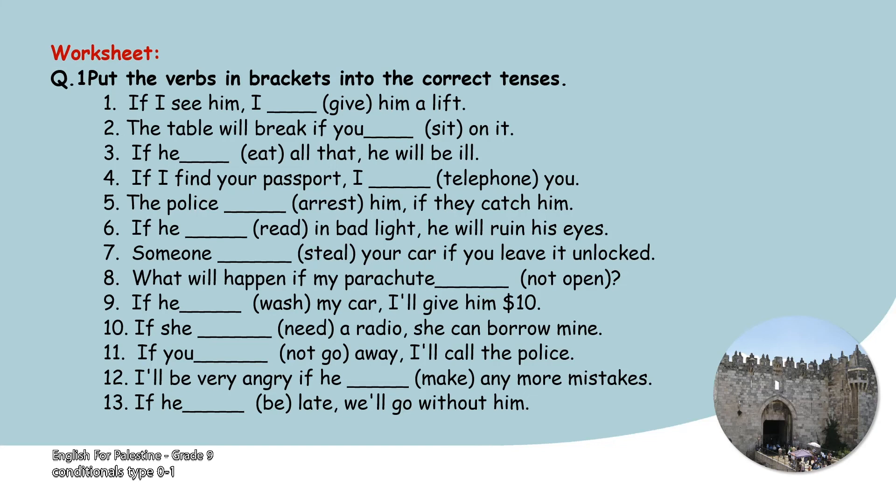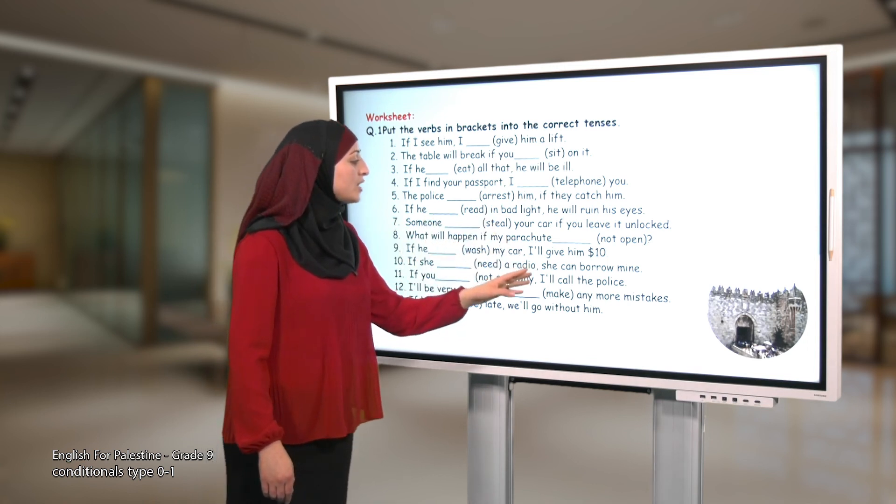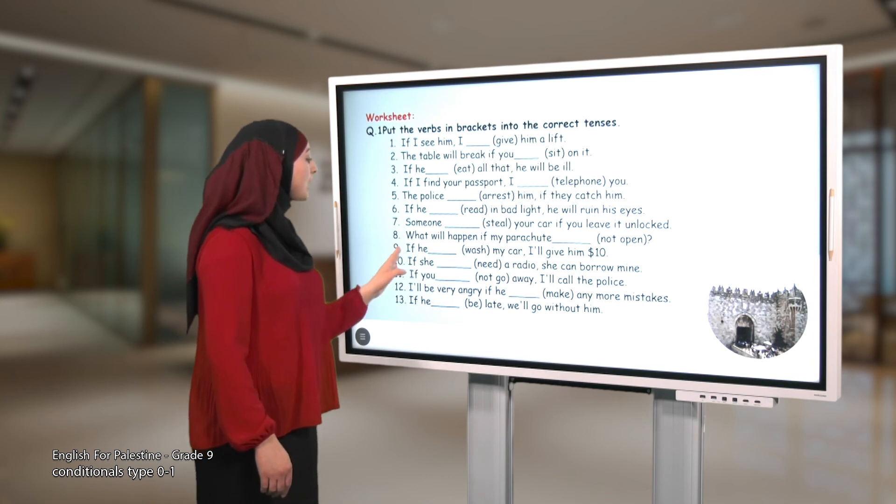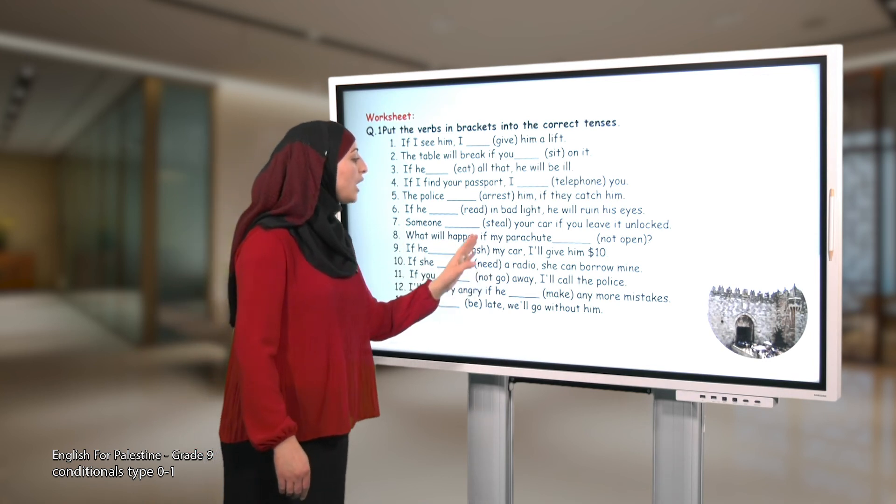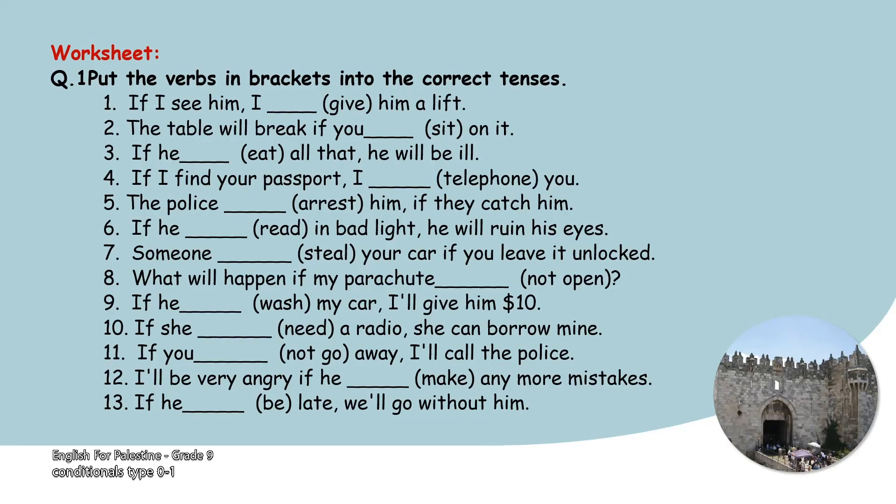Number six: If he read in bad light, he will ruin his eyes. Number seven: Someone steal your car if you leave it unlocked. Number eight: What will happen if my parachute not open? Number nine: If he wash my car, I will give him ten dollars.